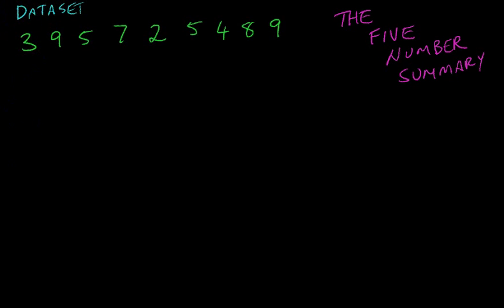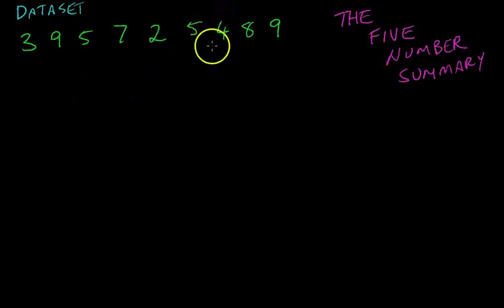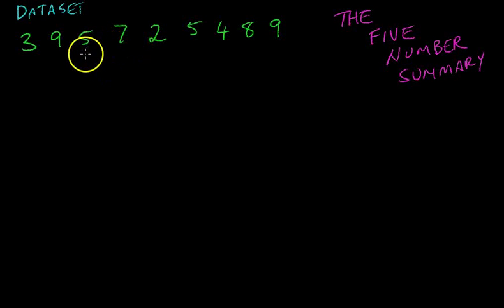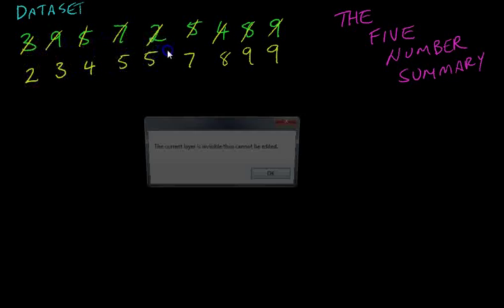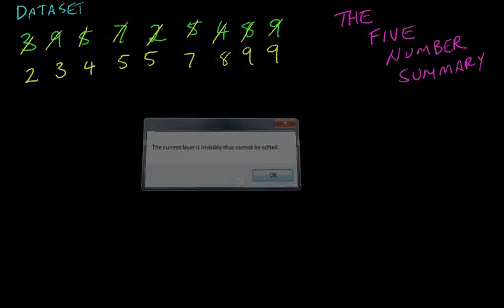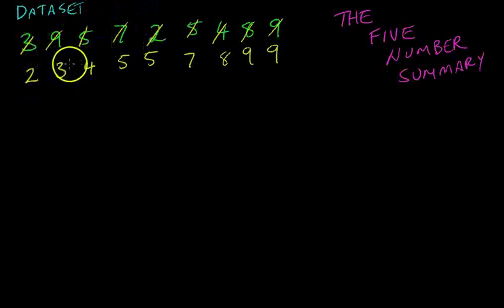Here's our data set: 3, 9, 5, 7, 2, 5, 4, 8, 9. Now the first step to doing your five-number summary is to put it in order. This is really important, so don't forget. I've already done it. So it becomes 2, 3, 4, 5, 5, 7, 8, 9, 9. There's our data set in order. Very important, don't forget this bit.